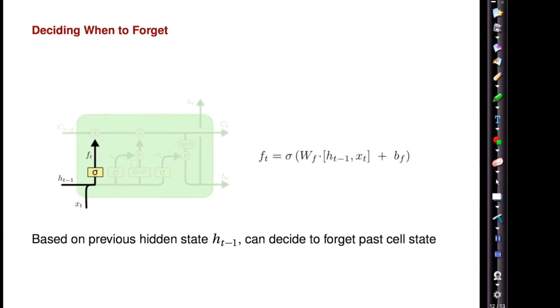It decides whether to remember the previous state based on a function of the previous hidden state and the current word you're seeing. For example, if your word is something like 'um', then you might just carry through your memory completely unchanged.